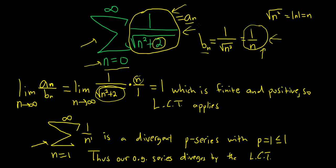And remember, when you're using LCT, basically you just call this A sub n. To find B sub n, usually you just take the leading terms. You take this limit. Just say it's finite and positive, so LCT applies.